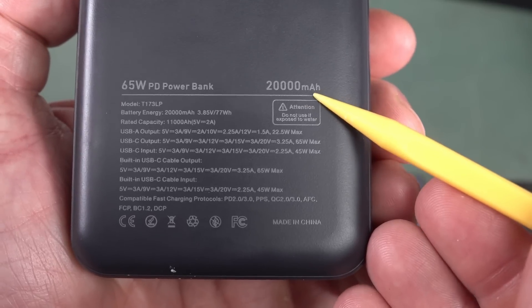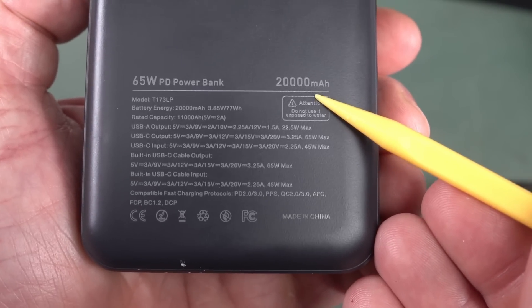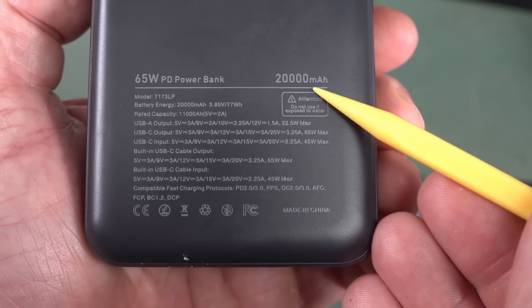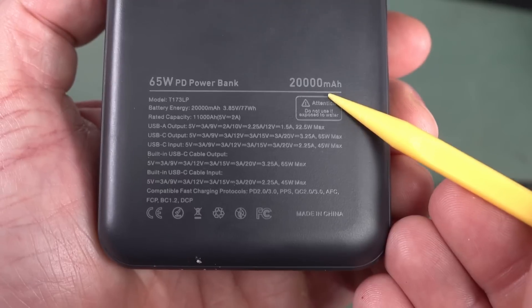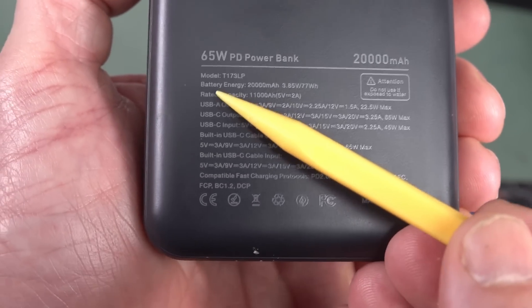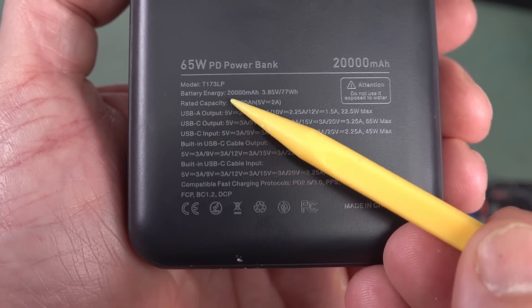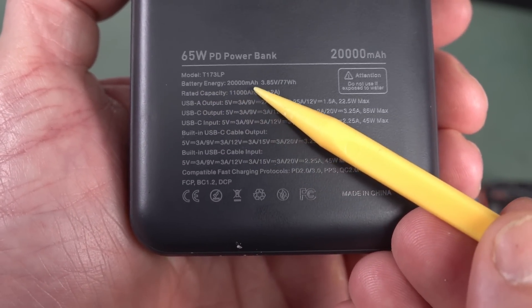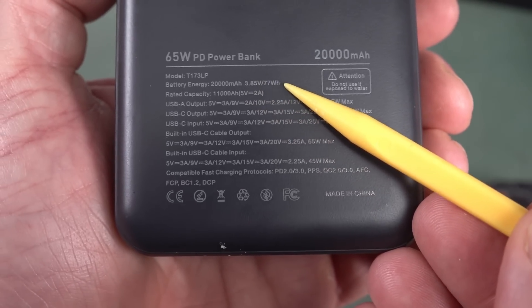Now, milliamp-hours is actually not the correct way to compare battery capacities because milliamp-hour is a charge, it's not an energy. So, even though it's got battery energy here, 20,000 milliamp-hours, but it actually gives you a watt-hour figure.